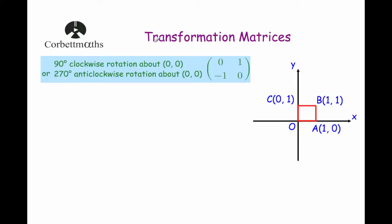Hi, welcome to ScorpioMath's video on transformation matrices. In this video we're going to focus on the transformation matrix that is a 90 degrees clockwise rotation about the origin, or a 270 degrees anti-clockwise rotation about the origin. And that's the matrix 0, 1, minus 1, 0.